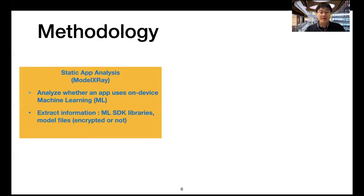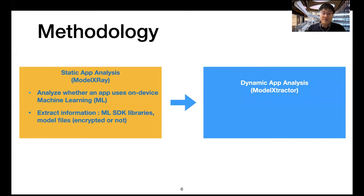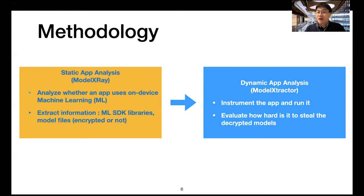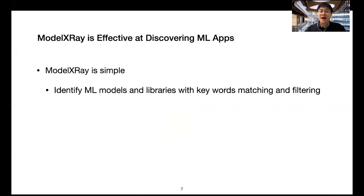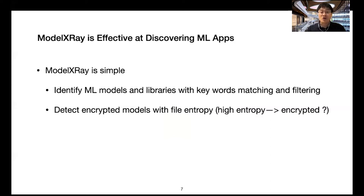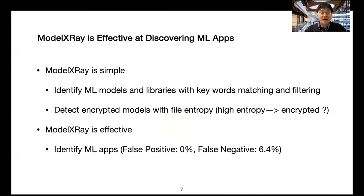ModelX3 also extracts information like machine learning SDK libraries, model files, and whether they are encrypted or not. For apps that do protect their models — like encrypting their models — we built a dynamic analysis tool called Model Extractor to instrument the app and evaluate how hard it is to steal the decrypted models. ModelX3 is simple by design: it identifies machine learning models and libraries with keyword matching and filtering, and detects encrypted models with file entropy. It identifies machine learning apps with a low false positive and false negative rate.